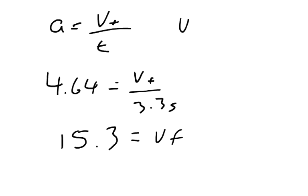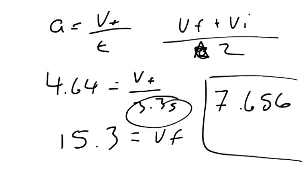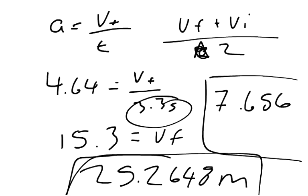So, average velocity VF plus VI over 2 would give us our average velocity would be 7.656 meters per second. And we times our average velocity by our time of 3.3 seconds to get our displacement. So, 7.65 times 3.3 is 25.26 meters. That is the final displacement. And that displacement is at 3.3 seconds at the constant acceleration.